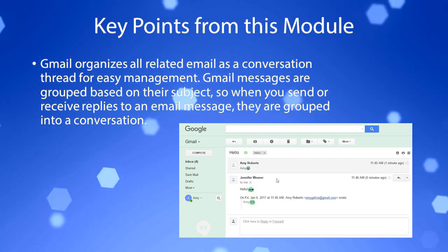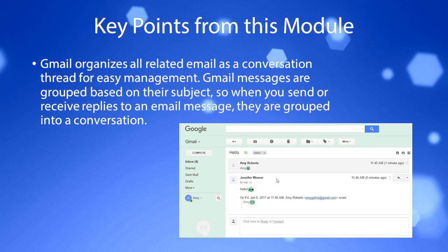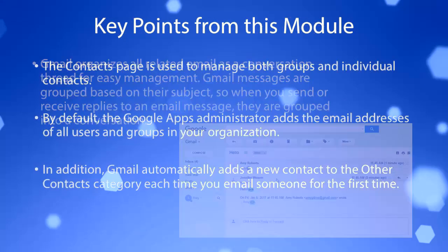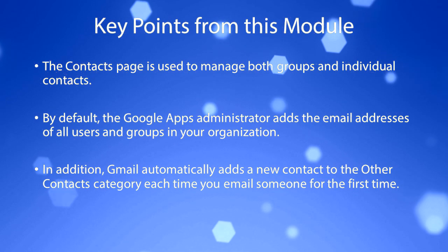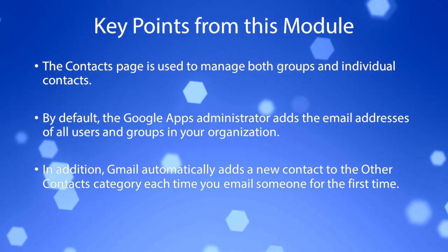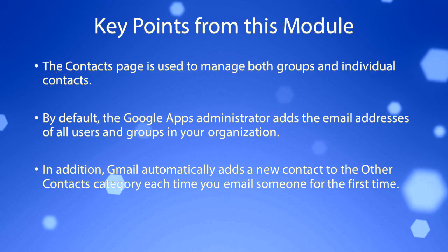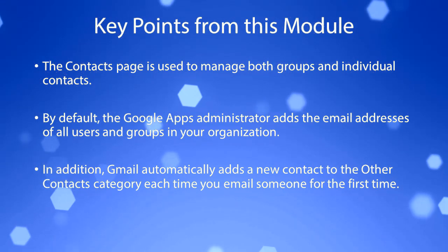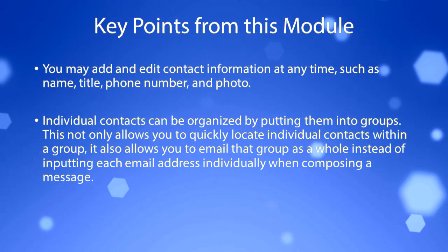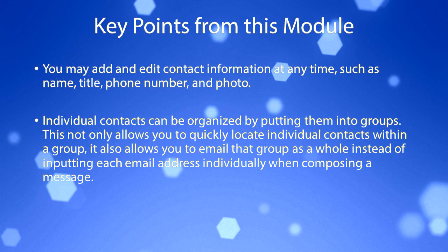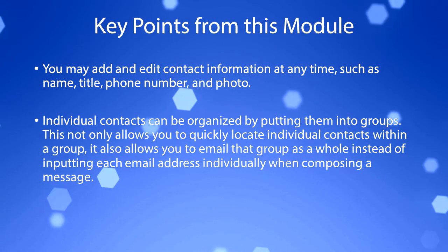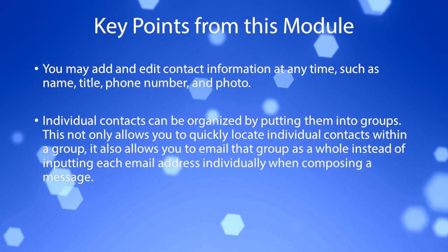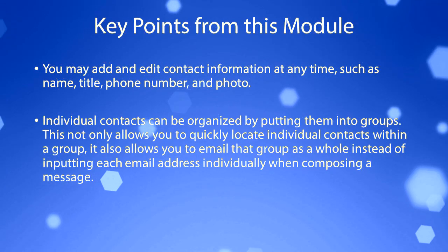Gmail organizes all related email as a conversation thread for easy management. Messages are grouped based on their subject, so when you send or receive replies to an email, they are grouped into a conversation. The Contacts page is used to manage both groups and individual contacts. By default, the Google Apps administrator adds the email addresses of all users in your organization. Gmail automatically adds a new contact to the Other Contacts category each time you email someone for the first time. You may add and edit contact information at any time, such as name, title, phone number, and photo. Individual contacts can be organized into groups, allowing you to email a group as a whole instead of inputting each address individually.